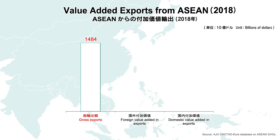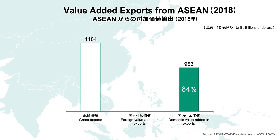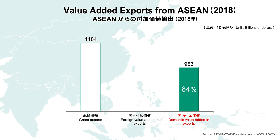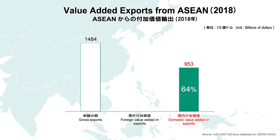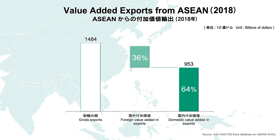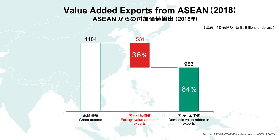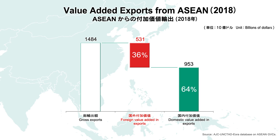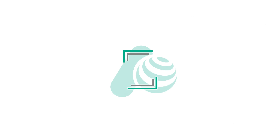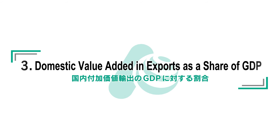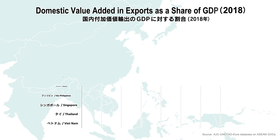The total amount of ASEAN exports in 2018 was 1,484 billion US dollars. The amount of domestic value added exports was 953 billion US dollars. The difference of 531 billion dollars was the foreign value added, which comprised 36 percent of total ASEAN exports.